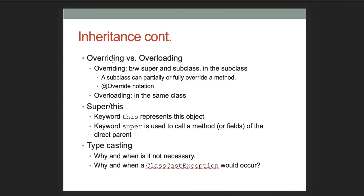Make sure you understand overriding versus overloading. Overriding means a method in a child class has the same method signature — the same method header — as a method in the parent class but creates a different body; it overrides the parent's declaration. We typically preface those with the @Override annotation. Overloading occurs within methods of the same class; overloaded methods have the same name but different parameters and parameter types.